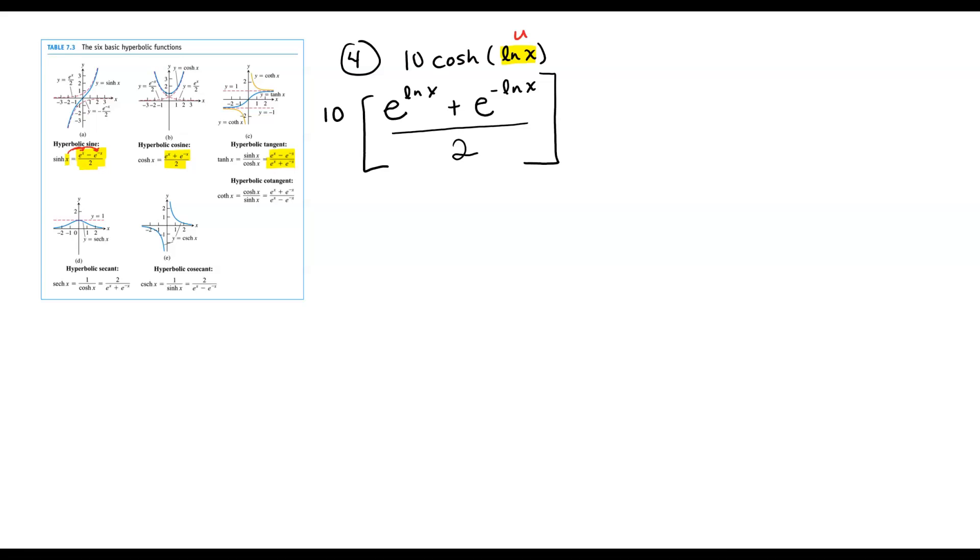What I'm going to do is I am going to now apply my rules for exponential and logarithmic functions. And that is that e to the natural log gets rid of itself. This negative comes up to the top as a minus 1 for the exponent. So what this looks like is 10 over 2 multiplied by x plus x to the minus 1. Just to finish this off here, we're going to have 5 times x plus 1 over x. I think it's actually okay to leave your answer like this.